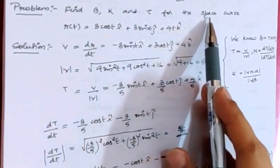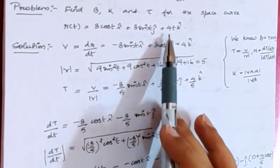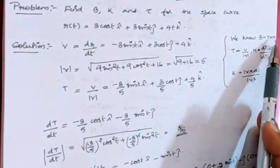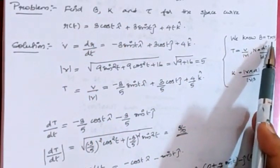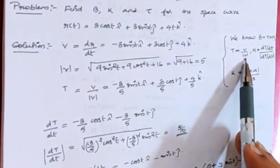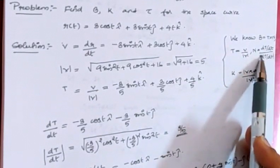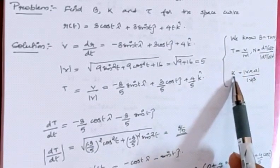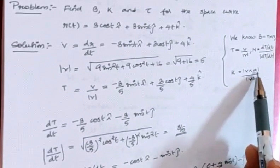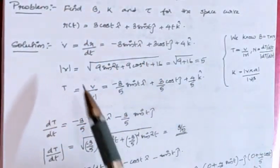Find B, κ, and τ for the space curve r(t) = 3cos(t)i + 3sin(t)j + 4tk. We know that to find B we need T and N, since B = T×N, where T is the unit tangent vector defined as v/|v|, and N is the unit normal vector defined as (dT/dt)/|dT/dt|. Curvature κ = |v×a|/|v|³, and τ is as defined above.